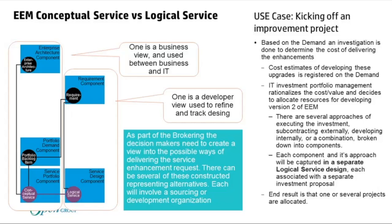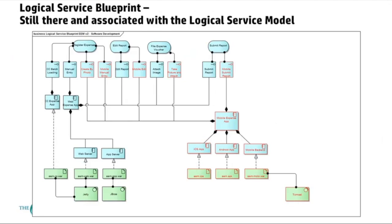You design what you want to do in terms of a logical service blueprint. Looking at a potential service blueprint, you have an existing design and add further instances — for example, you want to register an expense by creating it from a photo, so on your mobile app you can take a picture of the expense and have it registered. That would be delivered by a mobile expense app running on iOS and Android, dependent on a mobile backend. This is software architecture, not business architecture.